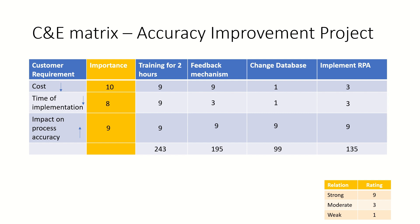This metric has logically identified which solution should be implemented first. With a score of 243 — the highest — training for two hours is the first solution to be implemented. Second is creating a feedback mechanism with a score of 195. Third is implementing RPA with 135. And finally, if the organization has the budget, they can change the database as well. Otherwise, implementing these three solutions will provide quite an improvement in accuracy.